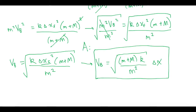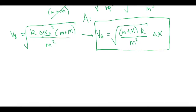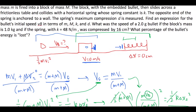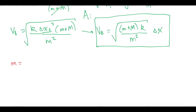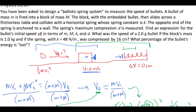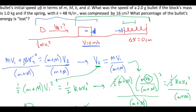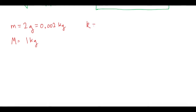Now for part b, they give us specific values. The mass of the bullet is 2 grams, which is 0.002 kilograms. The mass of the block is 1 kilogram. The spring constant k is 48 newtons per meter, and the spring was compressed by delta x of 16 centimeters, or 0.16 meters.